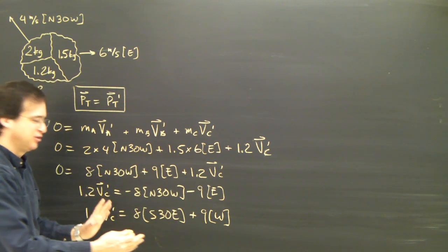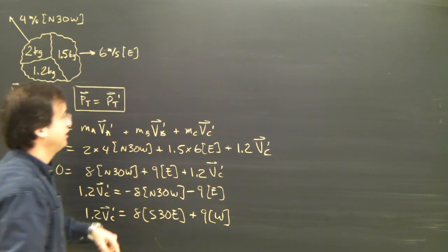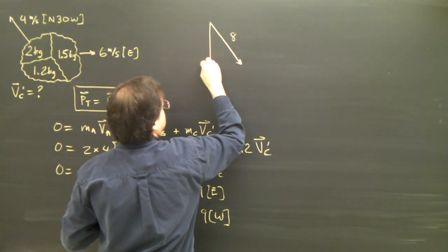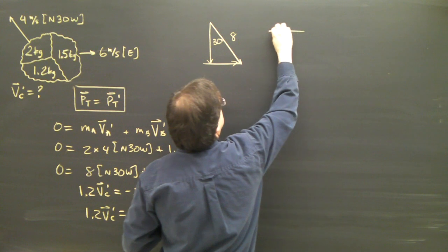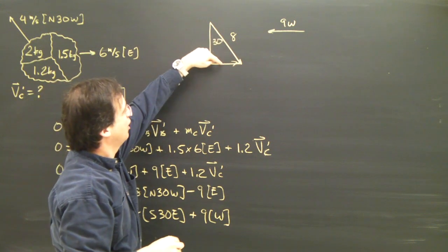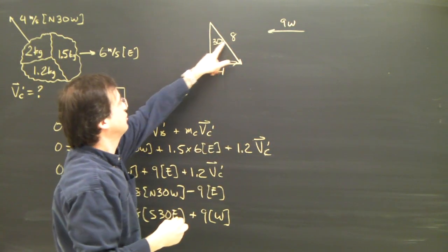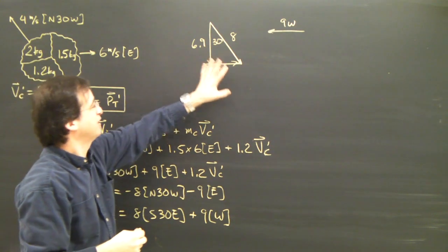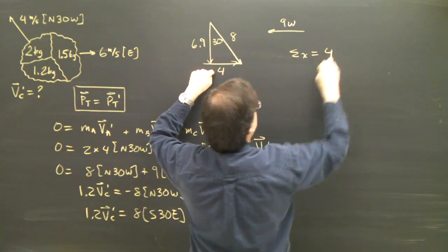So here's my equation. What I'm going to do is add these two vectors — 8 south 30 east and 9 west — and then set them equal to 1.2 v_c and solve for v_c. I need to break this into components. 8 south 30 east: the opposite side is 8 times sine of 30, which is 4, and 8 times cosine of 30 is 6.9. When I add two vectors, I break them into components and find the total in the x direction — that's going to be 4 to the right, so that's positive.